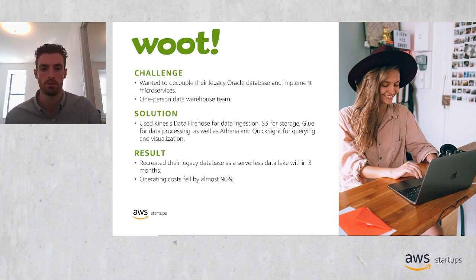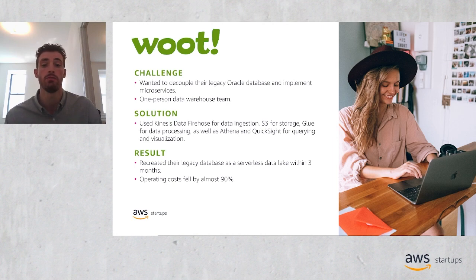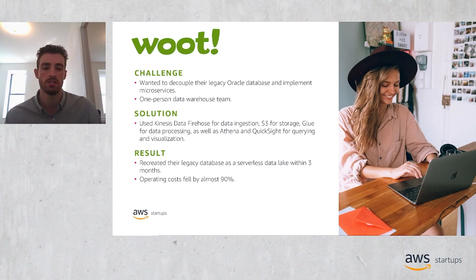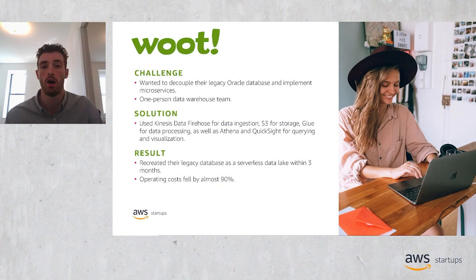Woot offers special deals and limited time offers. Woot was looking to replace their legacy data warehouse, which was built on a relational database. They started looking at how they could decouple their Oracle database and adopt a microservices approach using purpose-built tools. This migration required developing new ETL pipelines to get new data flowing in while also migrating existing data. The Woot data team was really just one person, so it was important to focus on AWS services that removed the undifferentiated heavy lifting of managing infrastructure as demands changed and technologies evolved. Woot ended up using Kinesis Data Firehose for data ingestion, S3 for storage, AWS Glue for data processing, as well as Amazon Athena and QuickSight for querying and visualization. Woot had developed their legacy database over the course of five years and recreated it as a serverless data lake in about three months. Their operating costs fell by almost 90%.